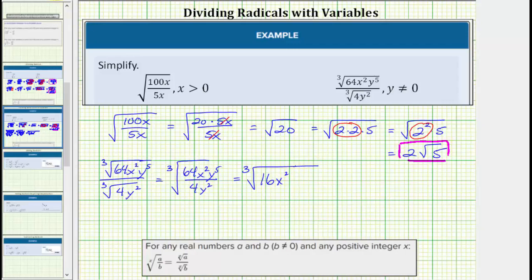Remember when dividing and the bases are the same, we subtract the exponents. So y to the fifth divided by y to the second is equal to y raised to the power of 5 minus 2, which equals y cubed. So this simplifies to the cube root of 16x squared y to the third.